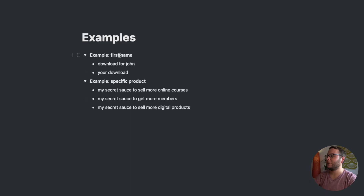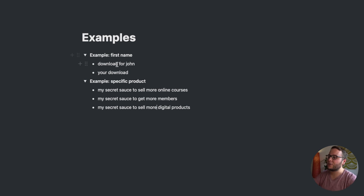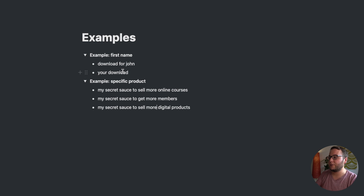I want to show you two different examples. The first one is based on whether we know someone's first name or not. So if we know their first name, we want to say 'download for John,' for example. Or if we do not know their first name, we just want to say 'your download.'